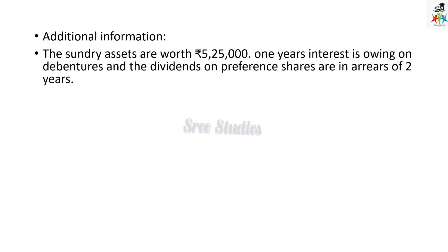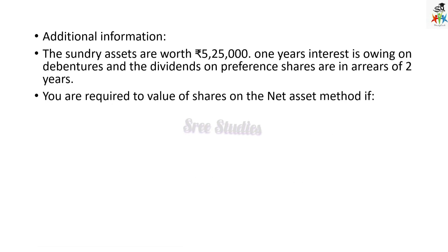Sundry assets were worth Rs. 5,25,000, so no need to calculate from the balance sheet — it has directly given the value. One year interest is going on debentures; we have to calculate 1 year interest. And the dividend on preference shares is in arrears for 2 years, so 2 years arrears of dividends are there for preference shareholders.